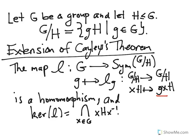The importance of this extension is that G mod H, particularly for large H relative to the size of G, is going to be a much smaller set than G was, which means that the symmetric group on G mod H will be smaller than the symmetric group on G, and we're going to be able to use this to get information about G.